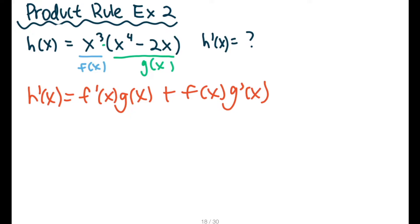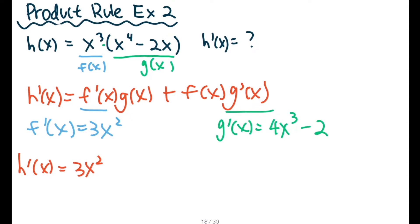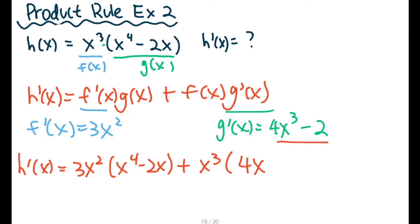Let's do it independently. So f prime of x: x cubed's derivative is 3x squared. And then we see the original function g of x and f of x. So let's solve for g prime of x. Inside this function, we see 4x cubed minus 2. Perfect. So let's put them together. H prime of x is equal to 3x squared, f prime, multiplied by g of x, which is the original function. That's why we like to label things to make everything clear. Then f of x — x cubed — times g prime of x, which is 4x cubed minus 2.